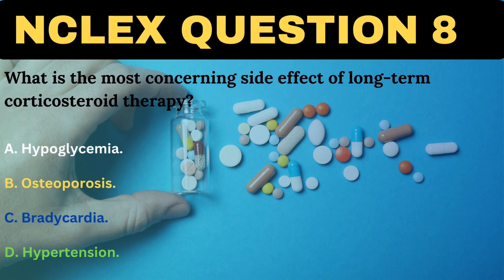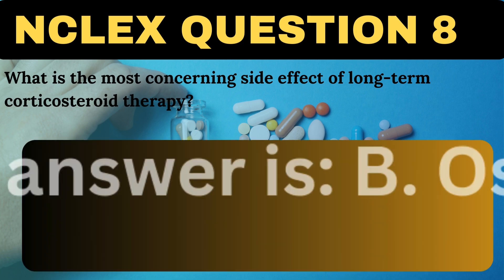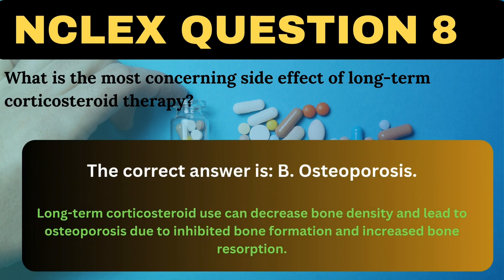What is the most concerning side effect of long-term corticosteroid therapy? A. Hypoglycemia. B. Osteoporosis. C. Bradycardia. D. Hypertension. The correct answer is B, Osteoporosis. Long-term corticosteroid use can decrease bone density and lead to osteoporosis due to inhibited bone formation and increased bone resorption.